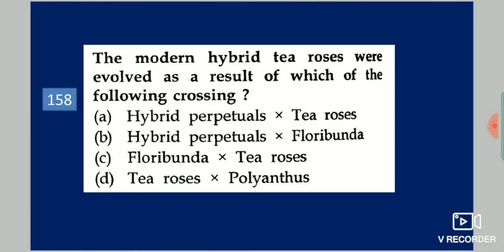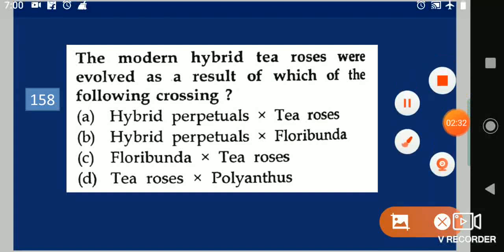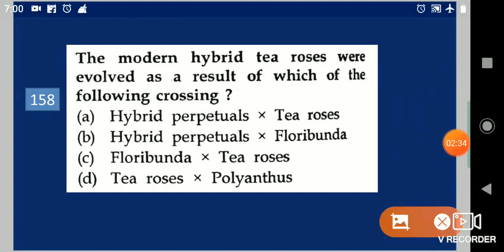Next question: The modern hybrid tea roses were evolved as a result of which of the following crossing? Your options are: hybrid perpetuals into tea roses; hybrid perpetuals into floribunda; floribunda into tea roses; tea roses into polyanthus. Your answer is floribunda into tea roses.